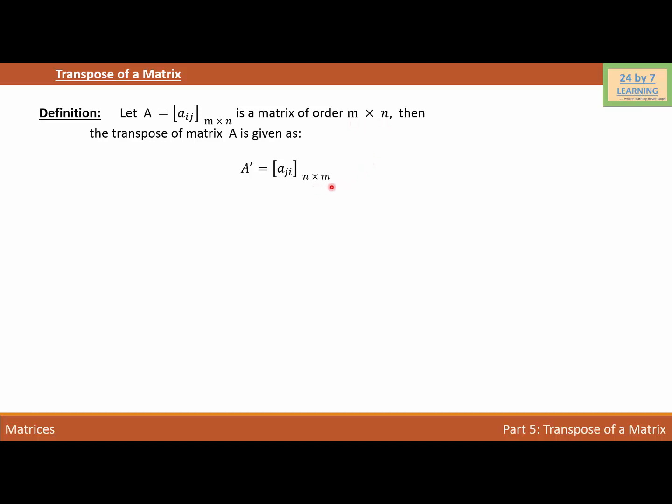Let's consider an example of a transpose of a matrix. A is a matrix with elements 2, 11, 0, 7, 9, 5. This is our first row. So we have 2 rows and 3 columns. So the order of this matrix is 2 by 3.